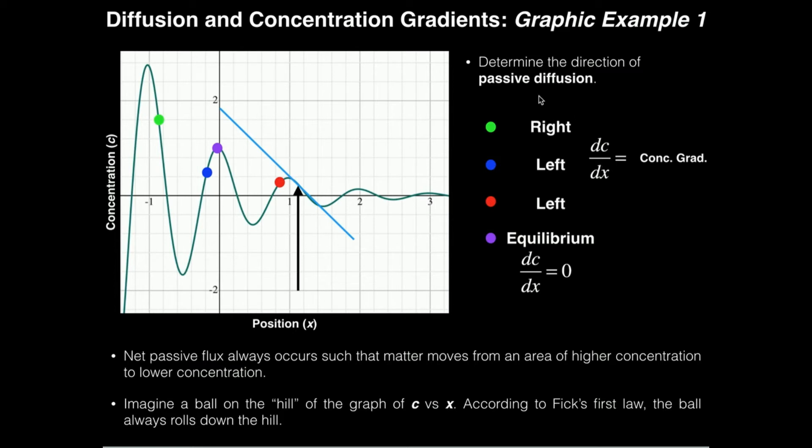So let's actually go into these examples now. Let's talk about the green ball, this point right here. If I were to say, where does net diffusion occur here, left or right? Well, it's on a negative slope, and we say the ball, so to speak, always goes down the hill, so flux should be to the right, right? Why is that?